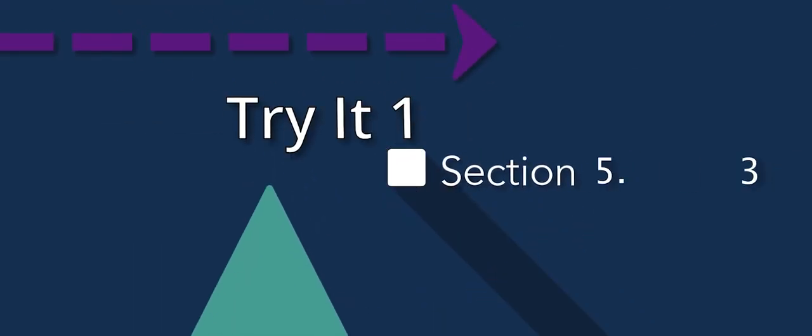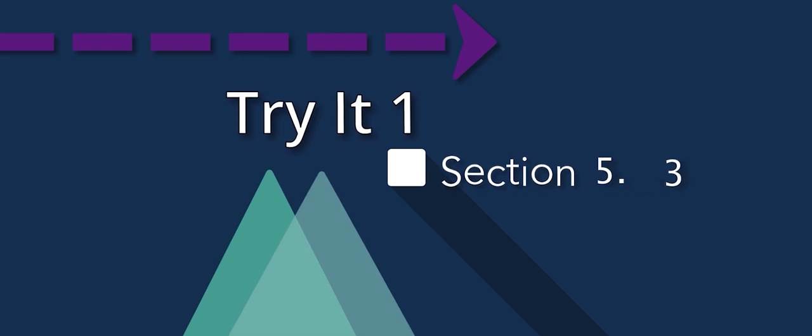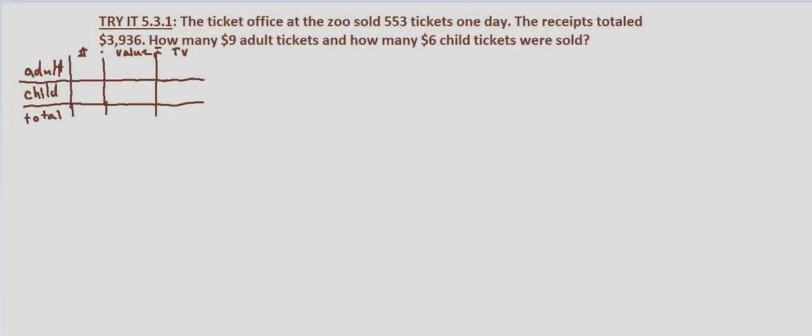In this mixture problem we're looking at ticket sales for adult tickets and child tickets. We're told that the ticket office at the zoo sold 553 tickets one day, the receipts totaled $3,936. We're asked how many nine-dollar adult tickets and how many six-dollar child tickets were sold — so what we're looking for is the number of adult tickets and the number of child tickets that were sold.